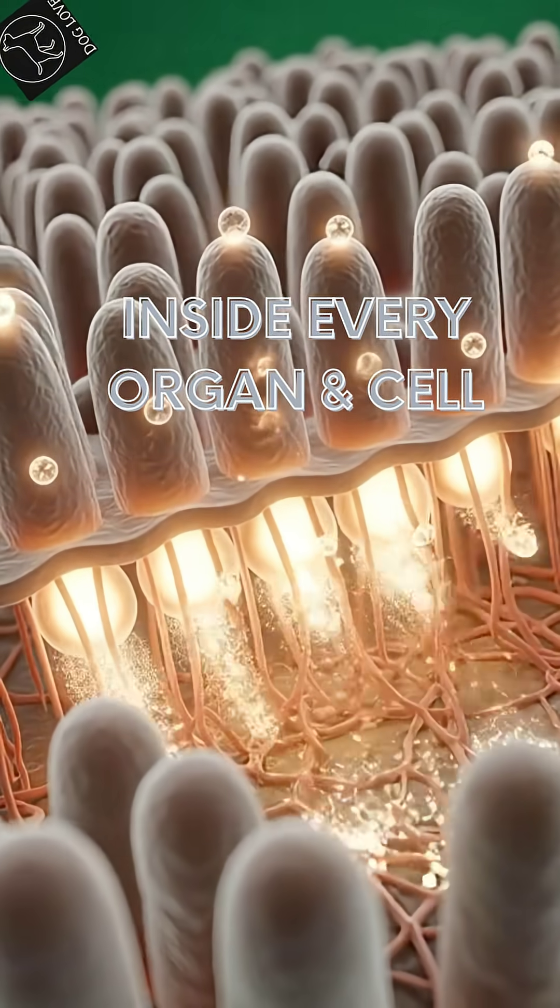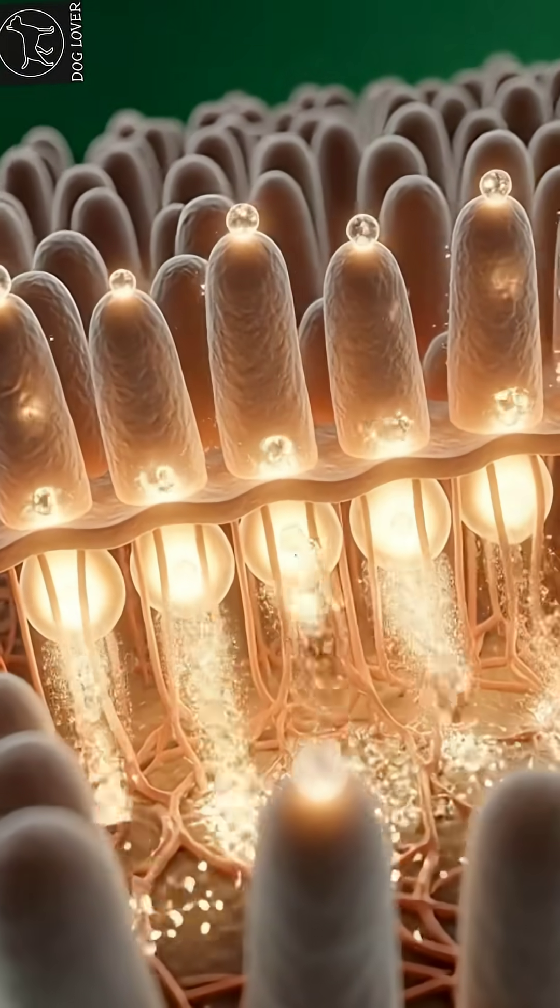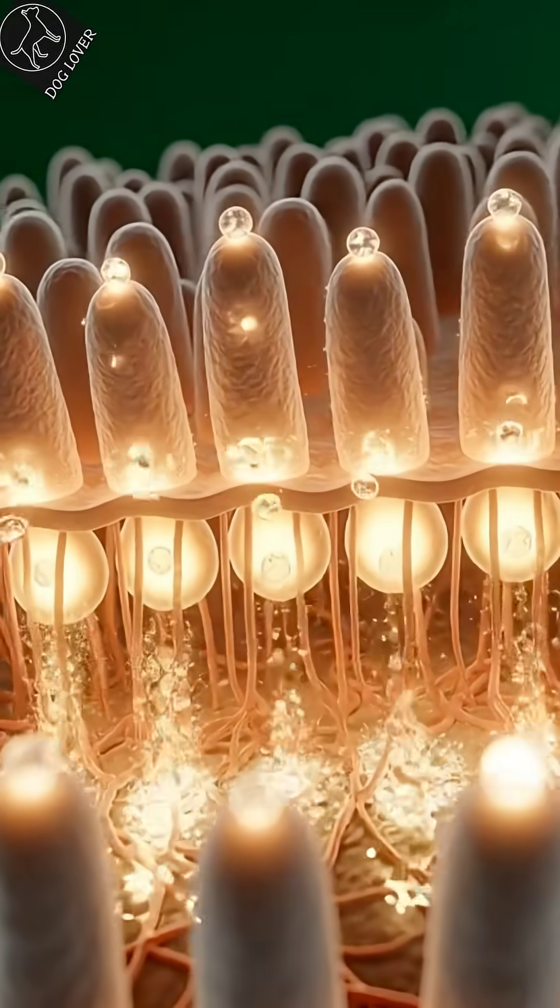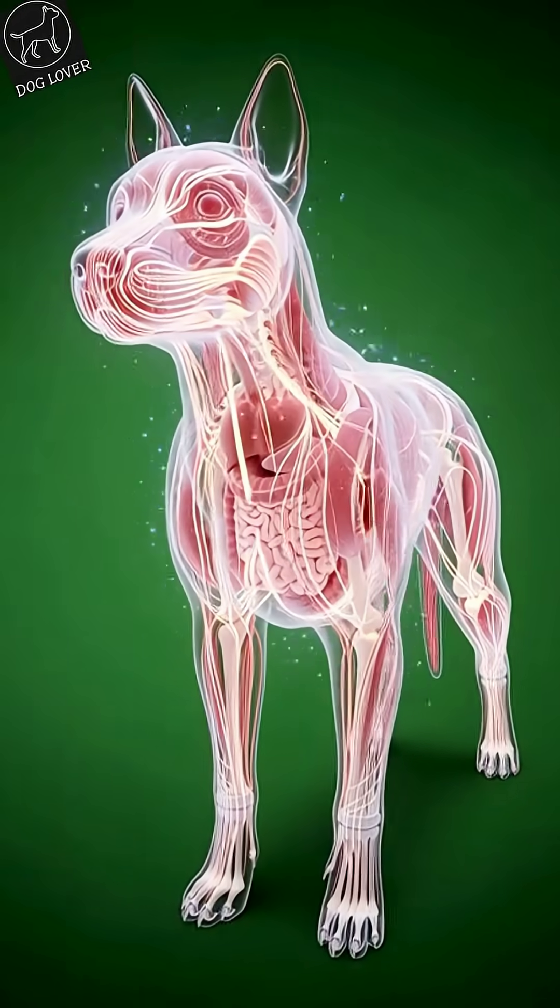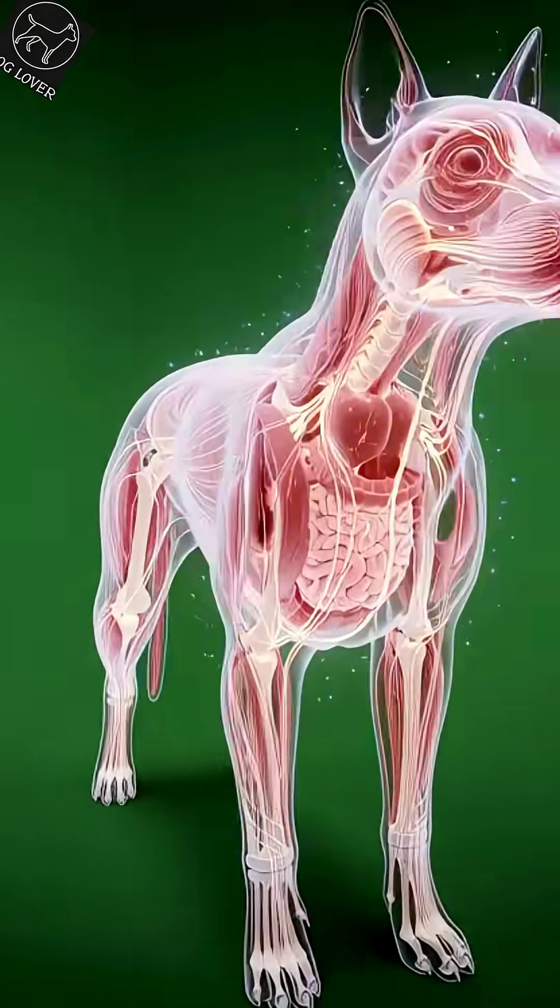As the dog chews and swallows, beef travels down into the stomach, where powerful digestive enzymes begin breaking it down into microscopic nutrient particles, preparing them to enter the bloodstream.